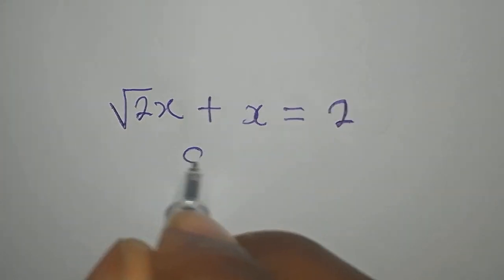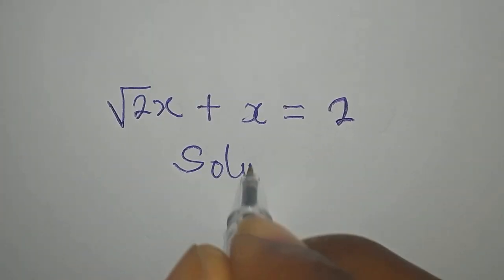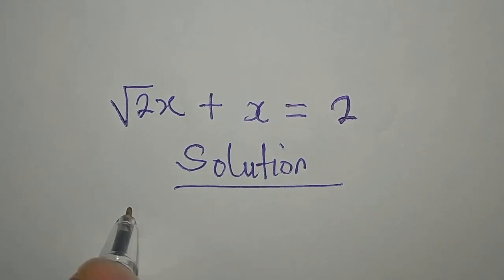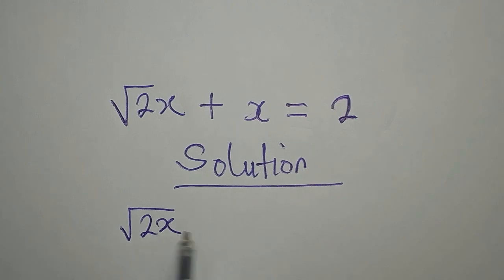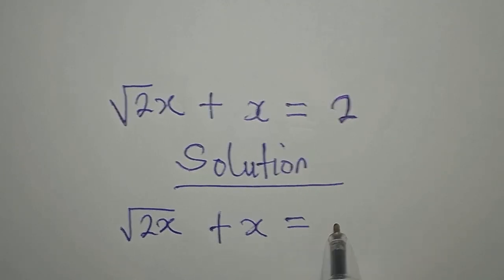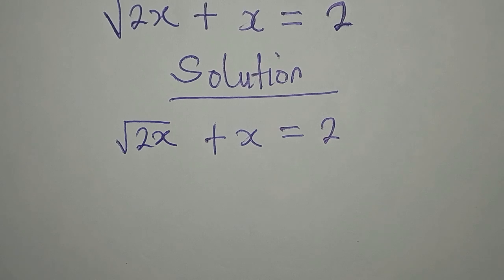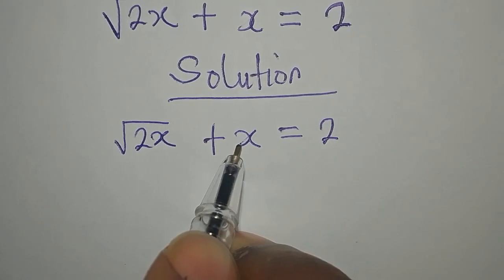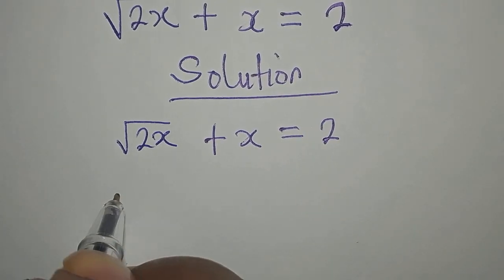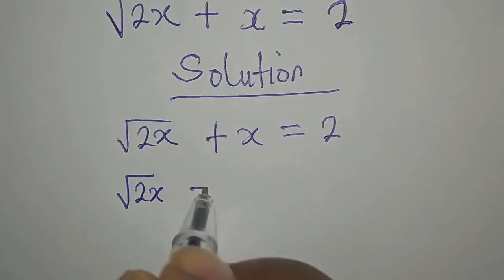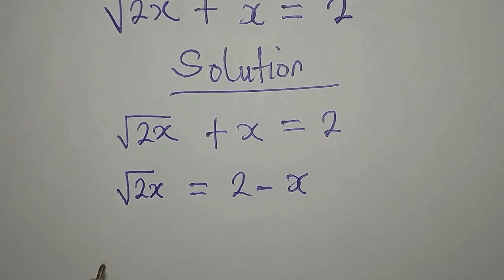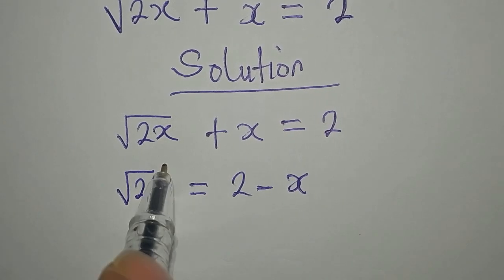Hello everyone, let's provide the solution to this problem: square root of 2x plus x equals 2. The first thing we're going to do is take x to the other side, so we're having square root of 2x equals 2 minus x.